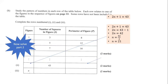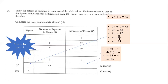After finding n=21, we solve for the perimeter using 4n+4: 4(21)+4 = 84+4 = 88. So the perimeter for figure 21 is 88.